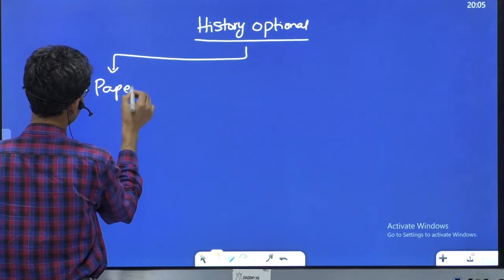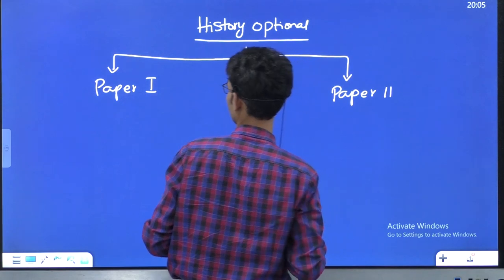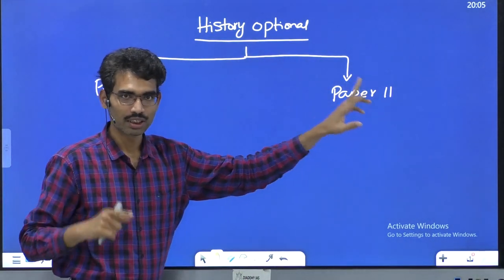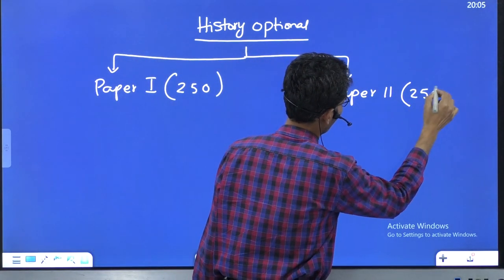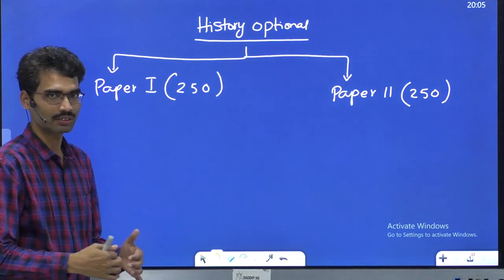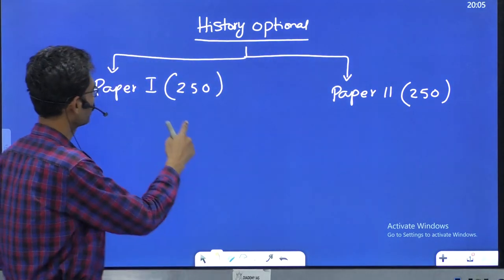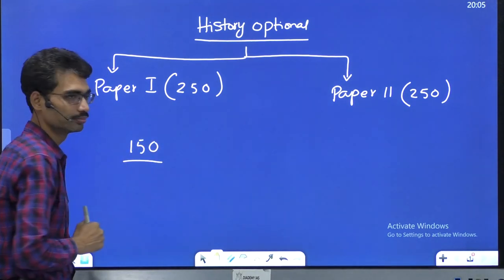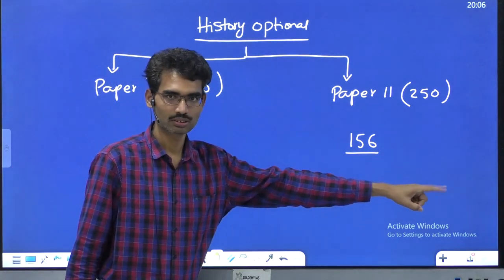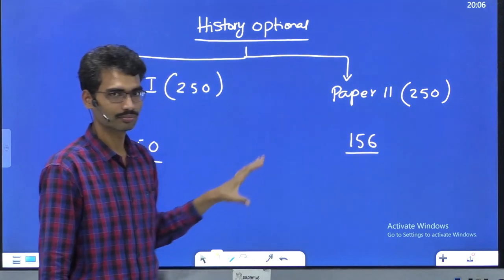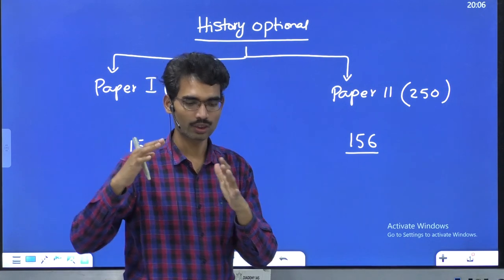The optional contains Paper 1 and Paper 2 — two papers, each of 250 marks. In the previous class we saw that last year's top ranker from history optional got 150 out of 250 in Paper 1, which is 60%, and more than 60% in Paper 2. So combining both optional papers, toppers often get 300 plus. On average, most students get around 250 to 260.